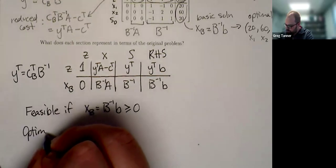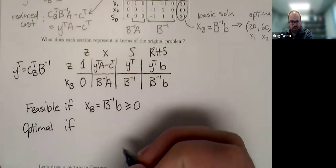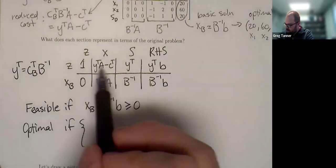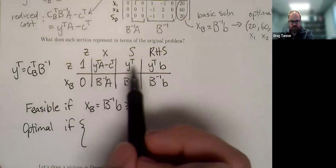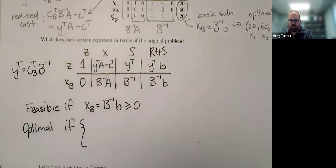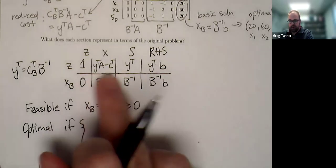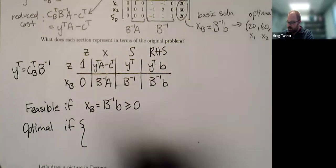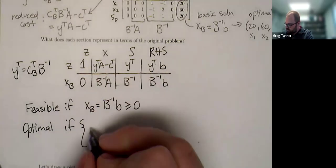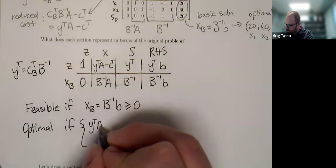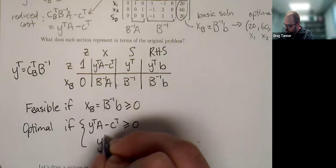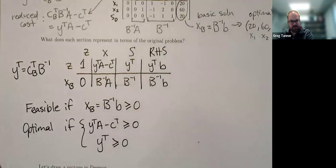We're optimal if two things and we need both of them. We need that all of the values in our objective row are greater than or equal to zero for a maximization problem. We're doing this assuming a maximization problem. It's the exact opposite for a minimization problem. They'll be all less than or equal to zero. So we're optimal if Y transpose A minus C transpose is greater than or equal to zero, and if Y transpose, all those elements are greater than or equal to zero. Those are exactly the constraints of the dual problem.